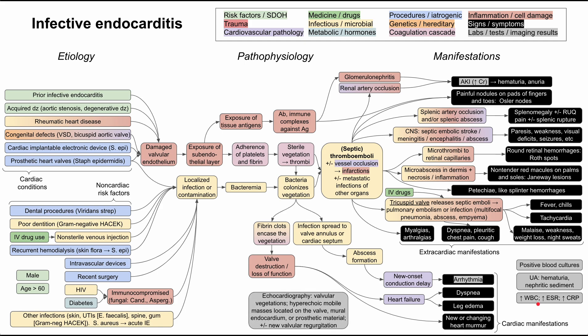The definitive test is usually echocardiography. Classic findings include valvular vegetations, described as hyperechoic mobile masses located on the valve or mural endocardium, or on the prosthetic material in patients with prosthetic heart valves. You might also see new valvular regurgitation or worsening valvular regurgitation. This has been a mechanism of disease map for endocarditis — I hope this was helpful, thank you for listening.